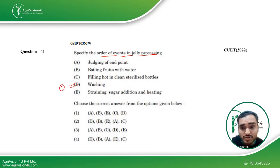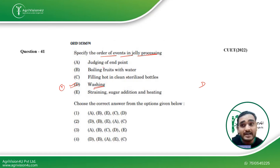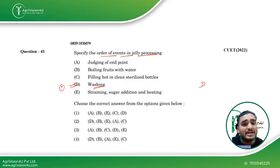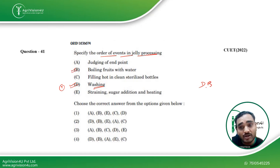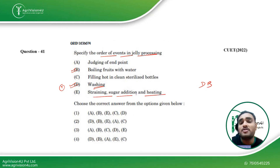The first step is D — washing of the fruits. Then we go to boiling of fruits with water, because we need to boil the fruits to give them a blanching treatment, for inactivation of enzymes and to prepare them for jelly processing — so B is the next step. Then straining is done to remove the pulp, followed by sugar addition for preservative action, and then heating — the cooking process — so E is the next step.